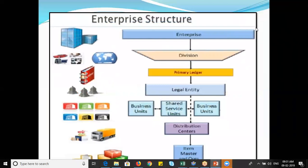Regarding enterprise structure: in E-Business Suite, the top-most level is called a Business Group, and that structure is called a Multi-Organization Structure. In Fusion, the equivalent is called an Enterprise. E-Business Suite uses an Operating Unit; Fusion calls this a Business Unit. Fusion uses the term Distribution Center where E-Business Suite uses Inventory Organization. The legal entity remains the same in both.